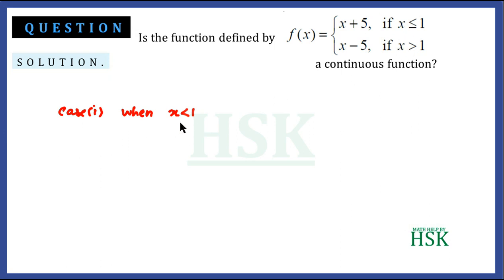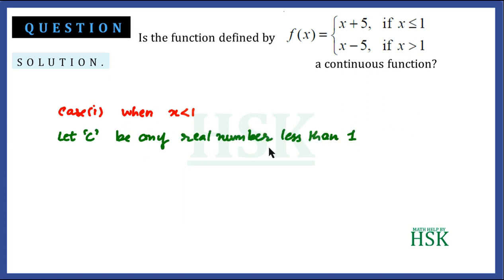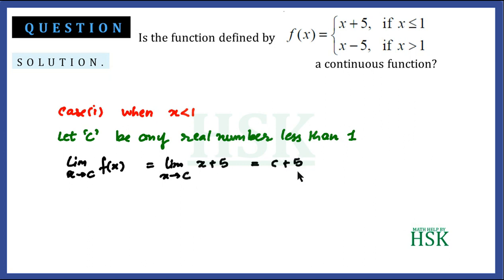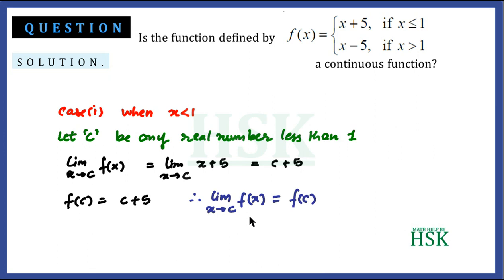In the first case, when x is less than 1, we assume c to be any real number less than 1. The limit of f(x) as x tends to c equals the limit of x + 5 as x tends to c, which equals c + 5. Since f(c) = c + 5 as well, the limit equals f(c) for all values of c less than 1.